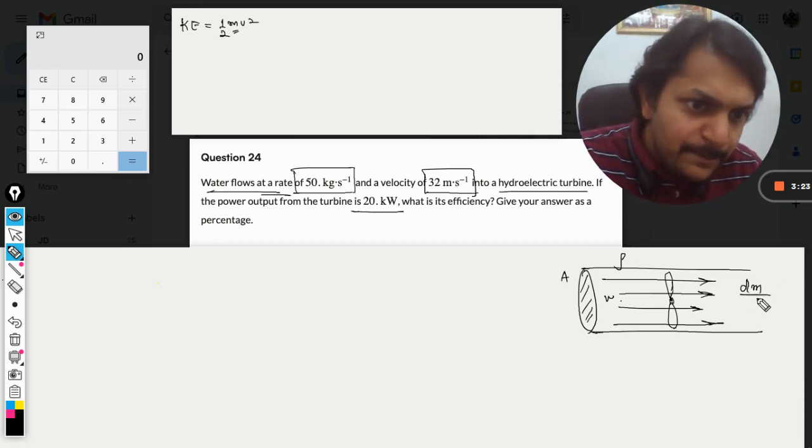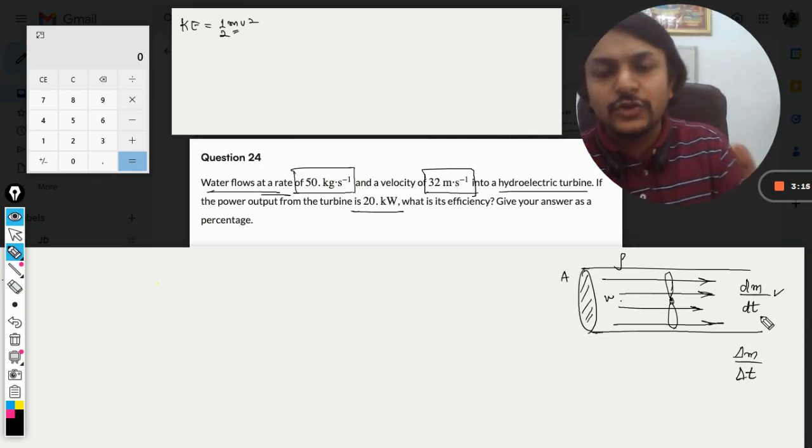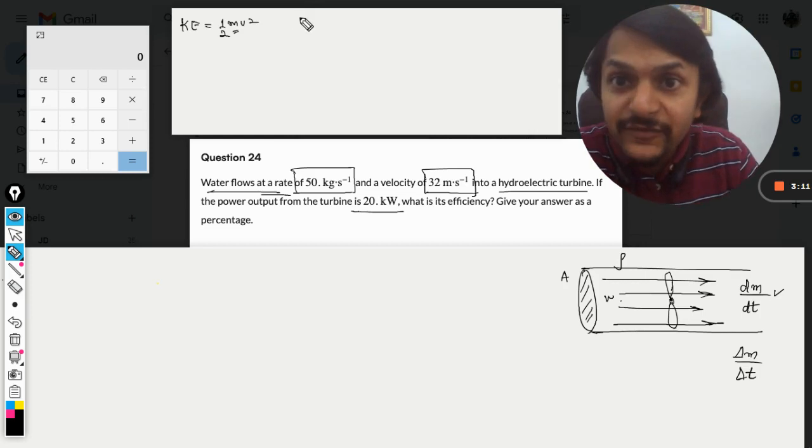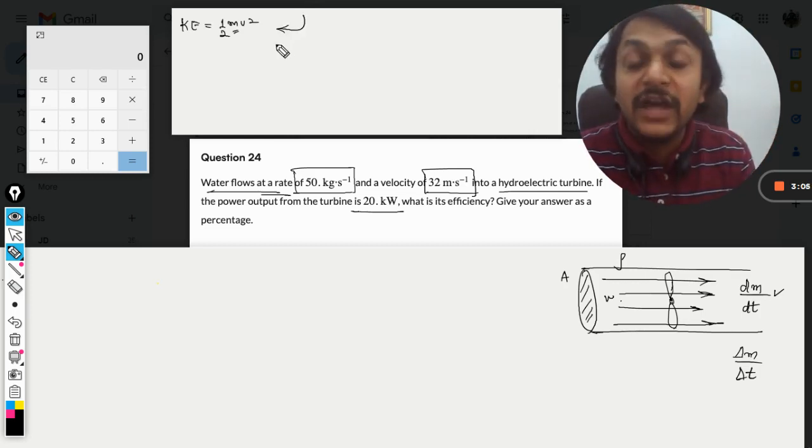We can write it as dm/dt or delta m by delta t. If you're good with calculus, you can use dm/dt. Since dm/dt is given, we need to divide this equation by time. Energy divided by time gives us the formula for power.